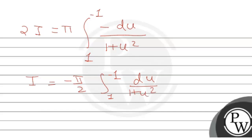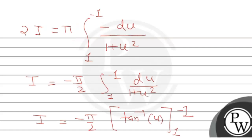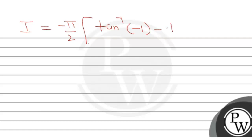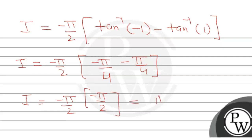We know that the integral of 1 upon (1 + x²) is tan⁻¹(x). So 2I equals π times [tan⁻¹(u)] evaluated from −1 to 1. This gives: 2I equals π times (tan⁻¹(1) − tan⁻¹(−1)) equals π times (π/4 − (−π/4)) equals π times (π/2). Therefore I equals π²/4. I hope you understood this question.